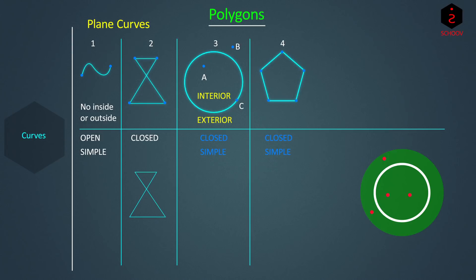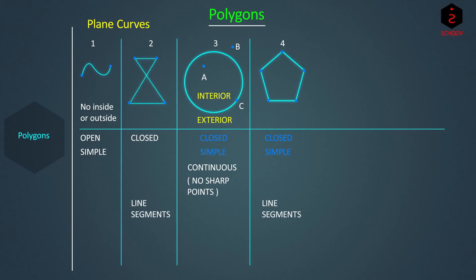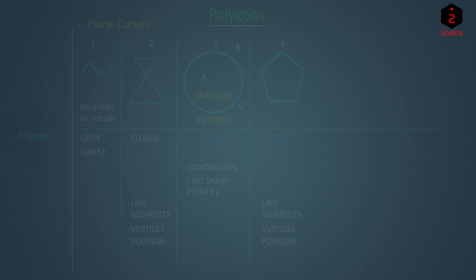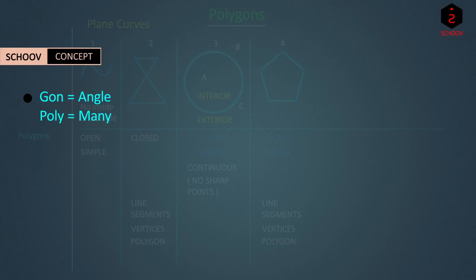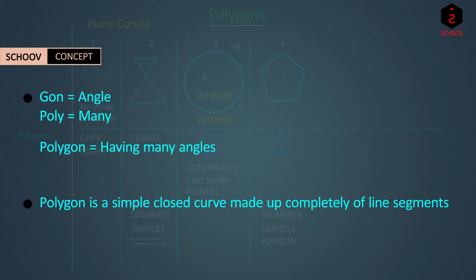So what's a polygon? Curves two, three, and four are all closed curves, but three is different from two and four. Three is a continuous curve without any sharp points or vertices. Two and four, on the other hand, are made of line segments and the ends of these line segments become vertices. Such curves are called polygons. 'Gon' means angle and 'poly' means many, and the vertices form angles — hence the name polygon, meaning many angles. But wait — two is not simple, and by definition it is not a polygon. So a polygon is a simple closed curve made up completely of line segments.